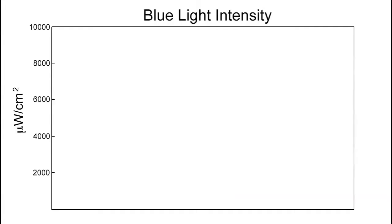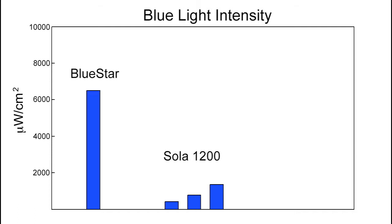We'll display the data on this graph. Solar 1200 in low power, medium, full. Now the Blue Star and the Solar Night Sea: low power, medium, full.